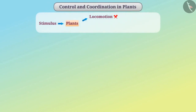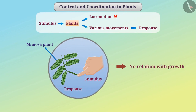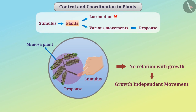Plants cannot change their place like animals, but they perform various movements to give a response. If we touch the mimosa plant, its leaves begin to fold and droop. This movement has no relation with growth. If the movement performed to give a response does not involve growth, it is called a growth-independent movement.